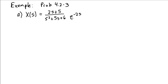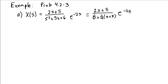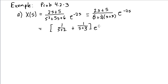We know that a time delay corresponds to multiplication by an exponential. The first thing we'll need to do is actually do a partial fraction expansion of this ratio of polynomials. We can expand the denominator as s plus 2 times s plus 3, times e to the minus 2s. Then from the cover-up method, letting s equal minus 2, we'll have 1 in the numerator and 1 in the denominator, so this term becomes 1. Similarly, the coefficient for the s plus 3 term is also 1, all times e to the minus 2s.